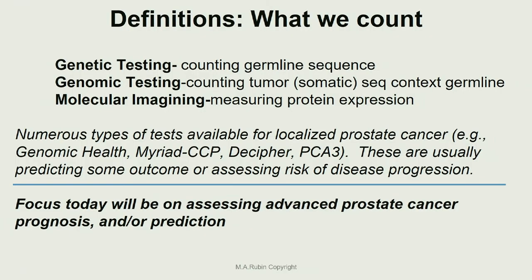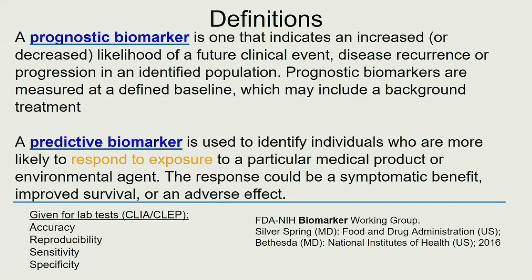I'm going to be talking mostly about genomic testing, which is thinking about the somatic lesions — thinking about the tumor. But we are also going to think about genetics, because it's obviously very important to consider germline changes, particularly with DNA repair alterations. There are a number of tests available commercially. As an American living in Switzerland, I'm very familiar with the American focus on many of these tests; in Europe they may not be as popular.